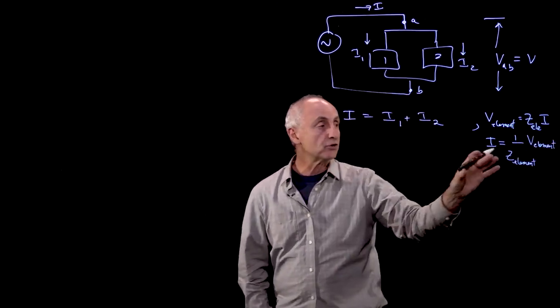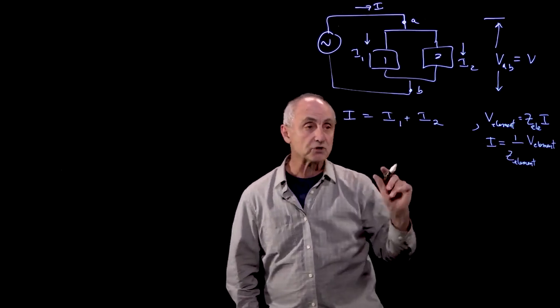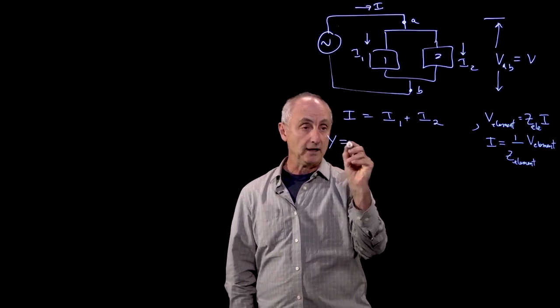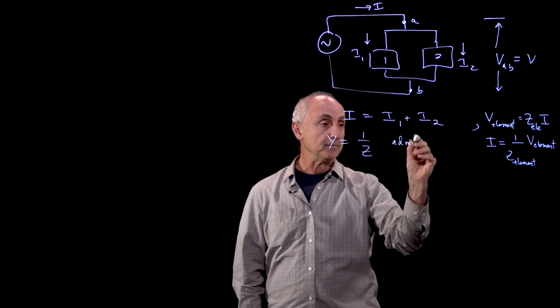Writing inverse impedances, one over impedance, is a little bit cumbersome all the time. So we introduce a new quantity, Y equals one over Z, which we call the admittance.